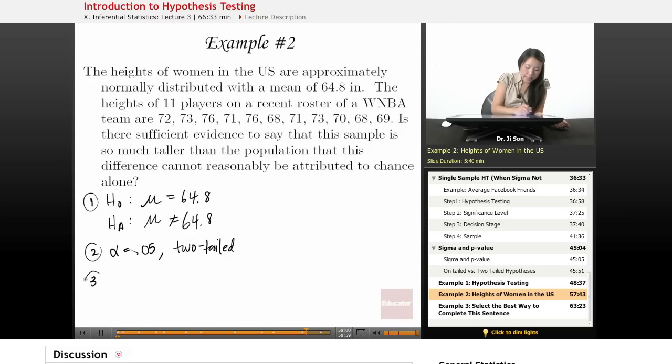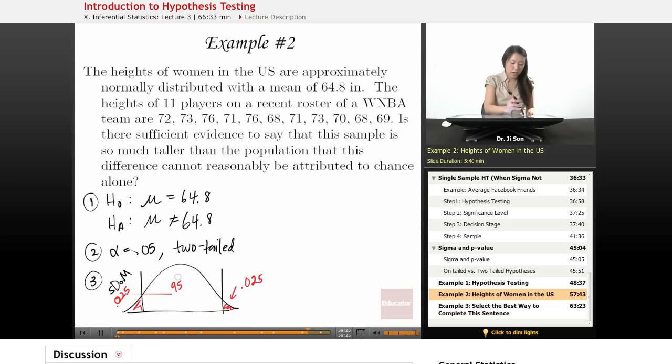And let's draw the sampling distribution here. So here, we might draw these boundaries. And because it's two-tailed, this is .025, .025, and here it's .95, right? So all together, it adds up to 1.